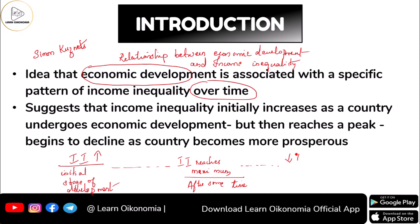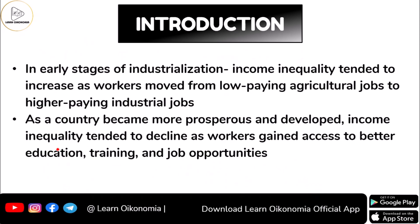After that, there would be changes over time and at the end, income inequality begins to decline. This is the period when the nation becomes developed or prosperous. This kind of relationship between income inequality and development is established by Simon Kuznets in his inverted U-shape hypothesis.